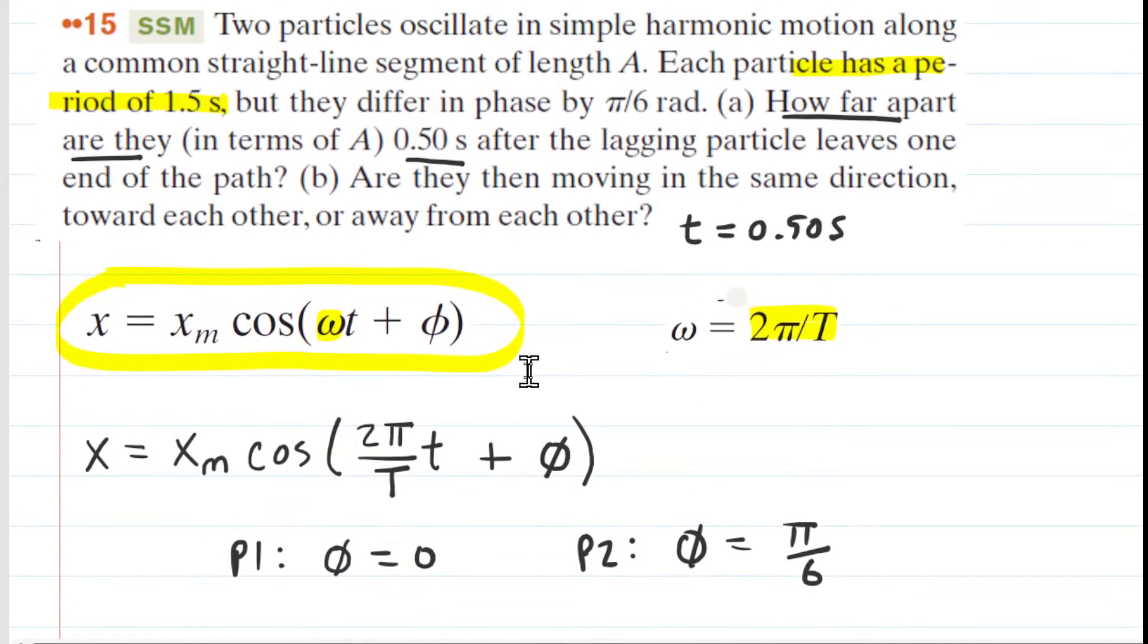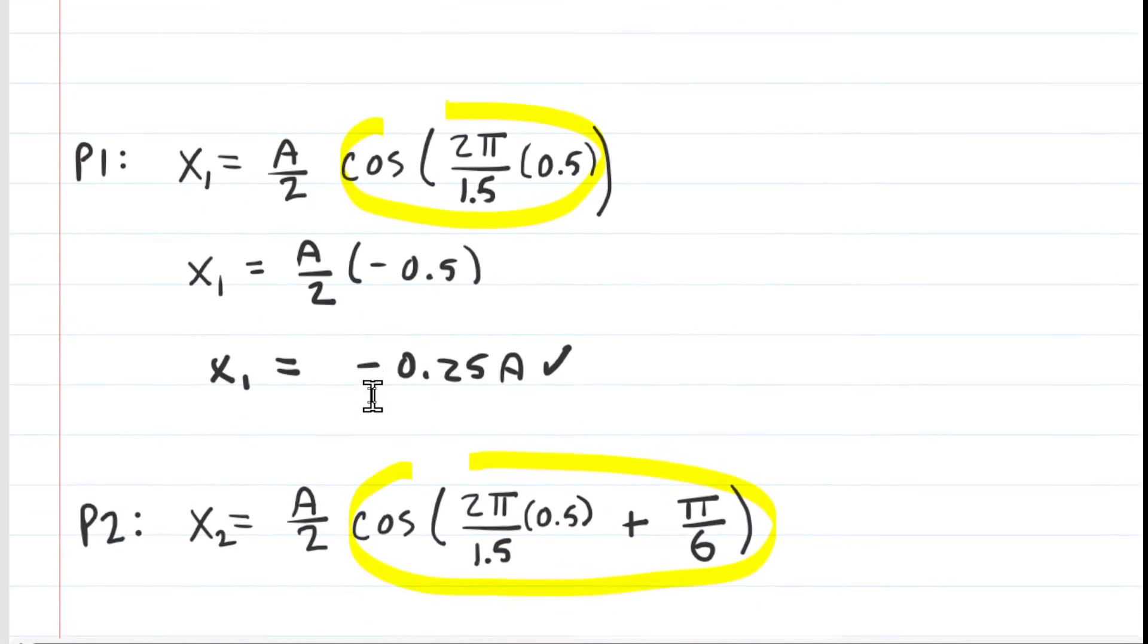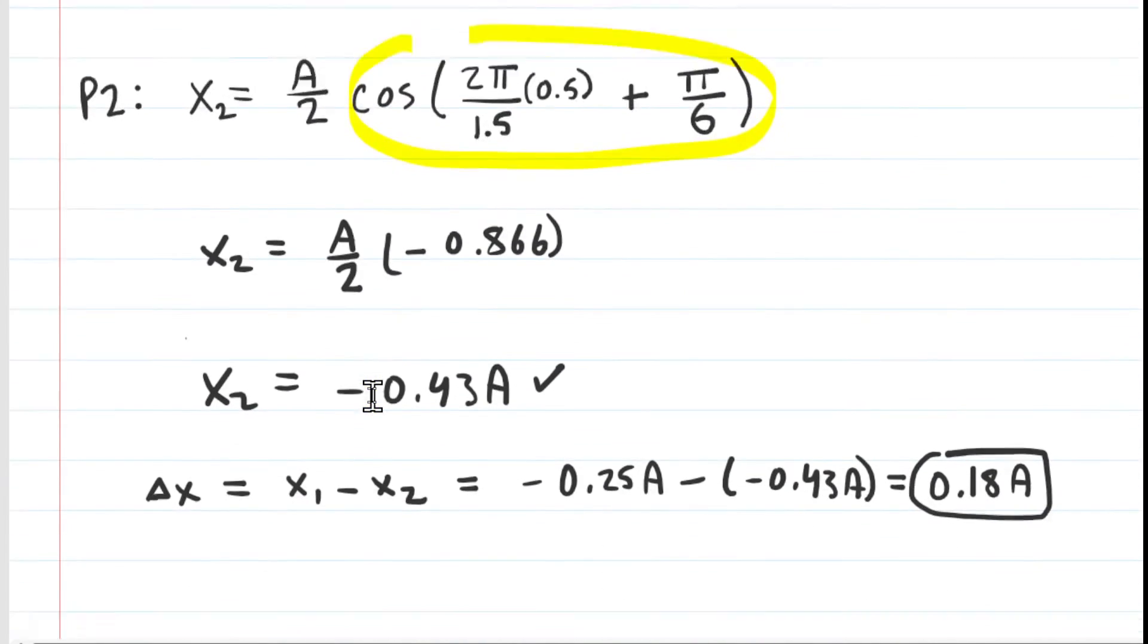Let's go back up and take a look at part B. It says, are they then, when they say then they mean half of a second, are they then moving in the same direction toward each other or away from each other? To get a feel for what direction each particle is traveling in, we would want to actually look at the velocity equations rather than the position equations.